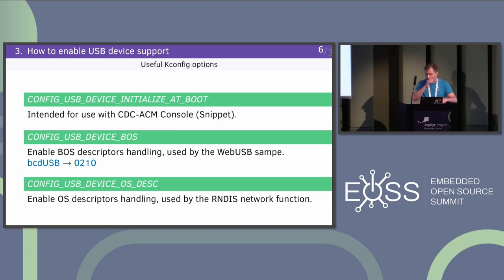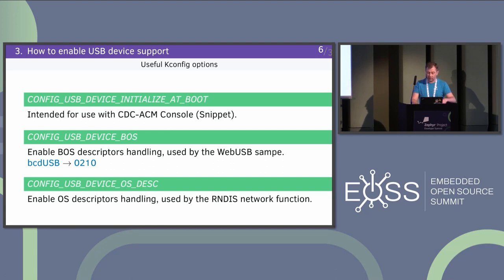But if the application uses some USB classes, you have a conflict. There's also support for Binary Object Store descriptors, enabled by a Kconfig option. It enables BOS handling by the stack and allows the user to register, for example, a compatibility BOS descriptor to a root BOS descriptor. This option changes bcdUSB value to signal the host to look for the BOS descriptor, for example for LPM. If your controller supports LPM, you can use BOS to provide the host information.